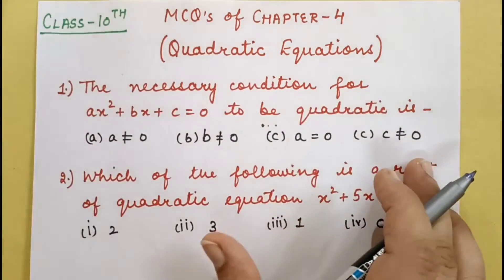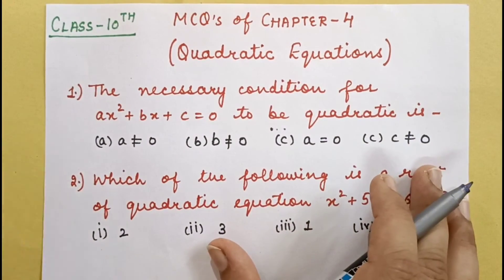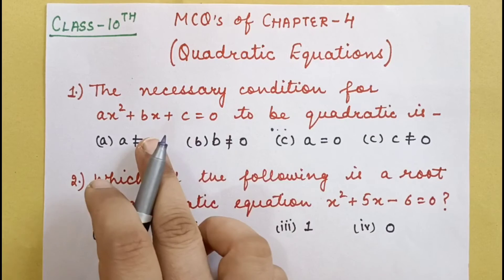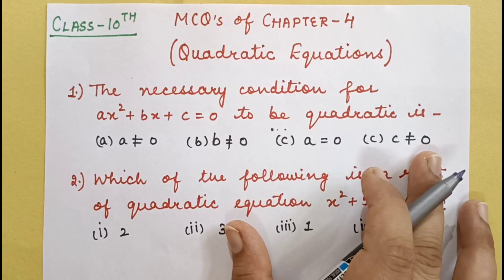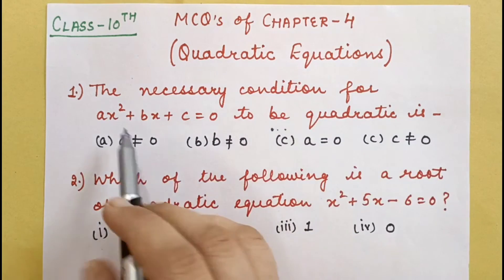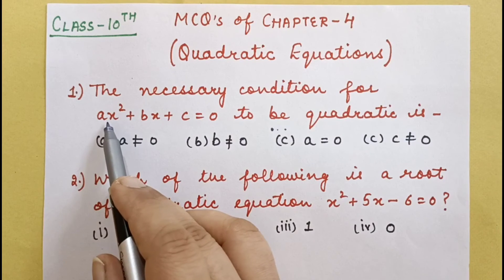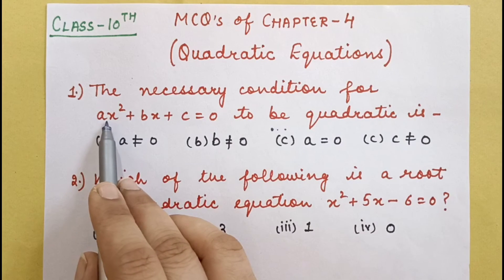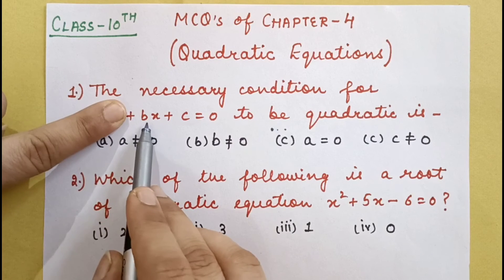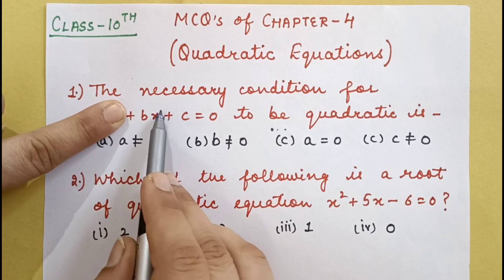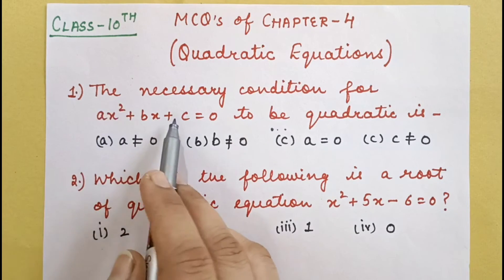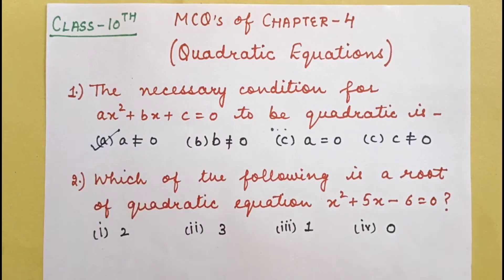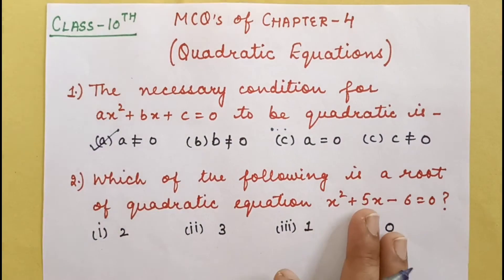This is exactly what the question asks. The necessary condition for this equation to be quadratic is: when a is not equal to 0. Because if a equals 0, what remains is bx + c — a power 1 equation, which becomes linear. So a must not be 0.